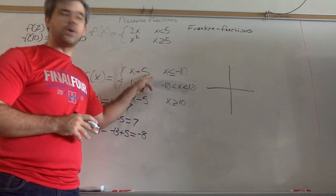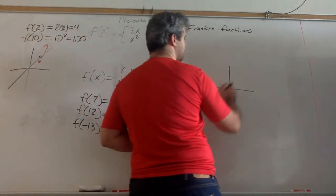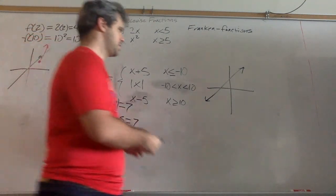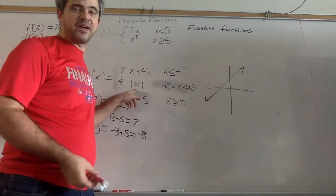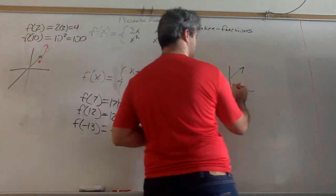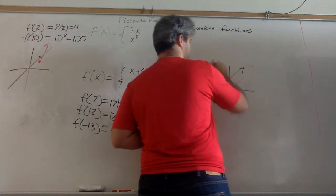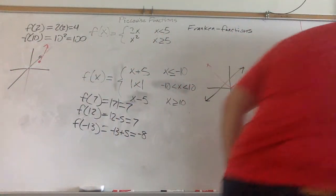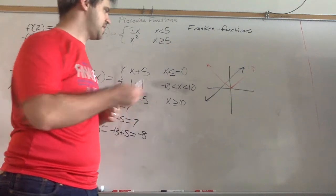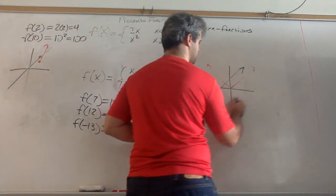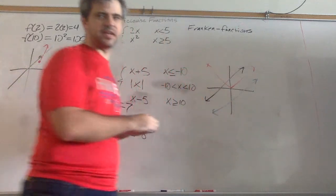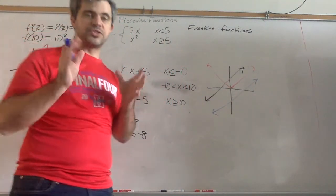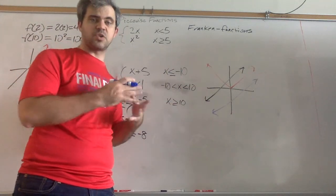x plus 5, I know what this looks like. This is a linear function where the y-intercept is positive 5. Absolute value, I know what that looks like. That's a little v thing here. And then x minus 5, that's a linear, except the y-intercept is negative 5. So what we do is we restrict these to the domain that is described here.